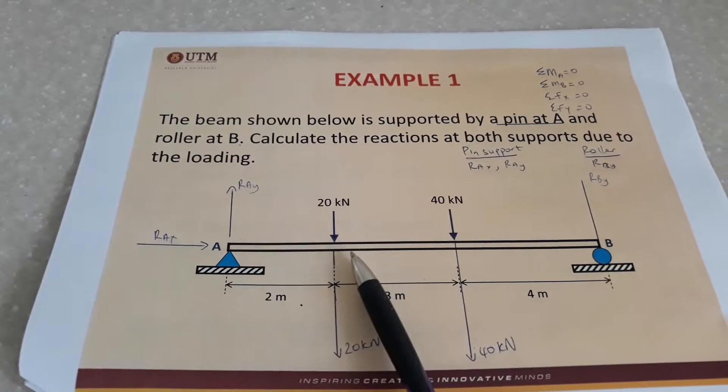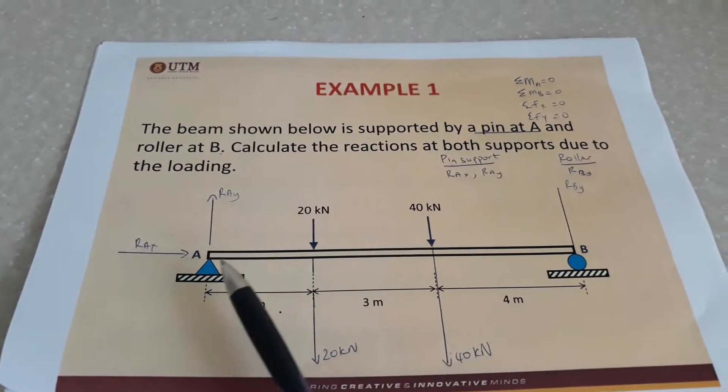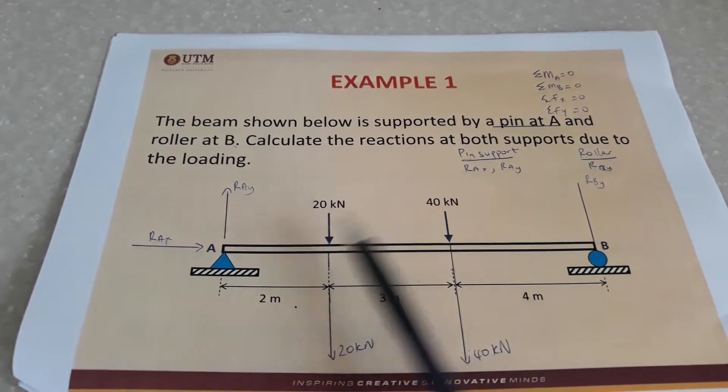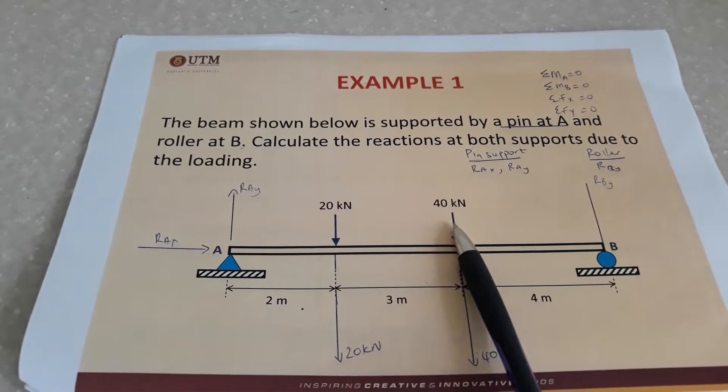This question is asking us to calculate the reactions at both supports due to these loadings: 20kN and 40kN loading.